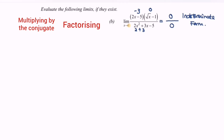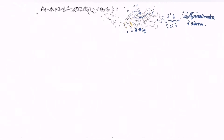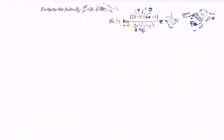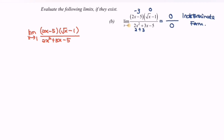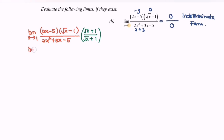Since we have a square root of x minus 1 in the numerator, I suggest multiplying by the conjugate. So I'm going to multiply by (√x + 1) over (√x + 1). Expanding, we get the limit as x approaches 1 of (2x - 5) multiplied by (x - 1) in the numerator.